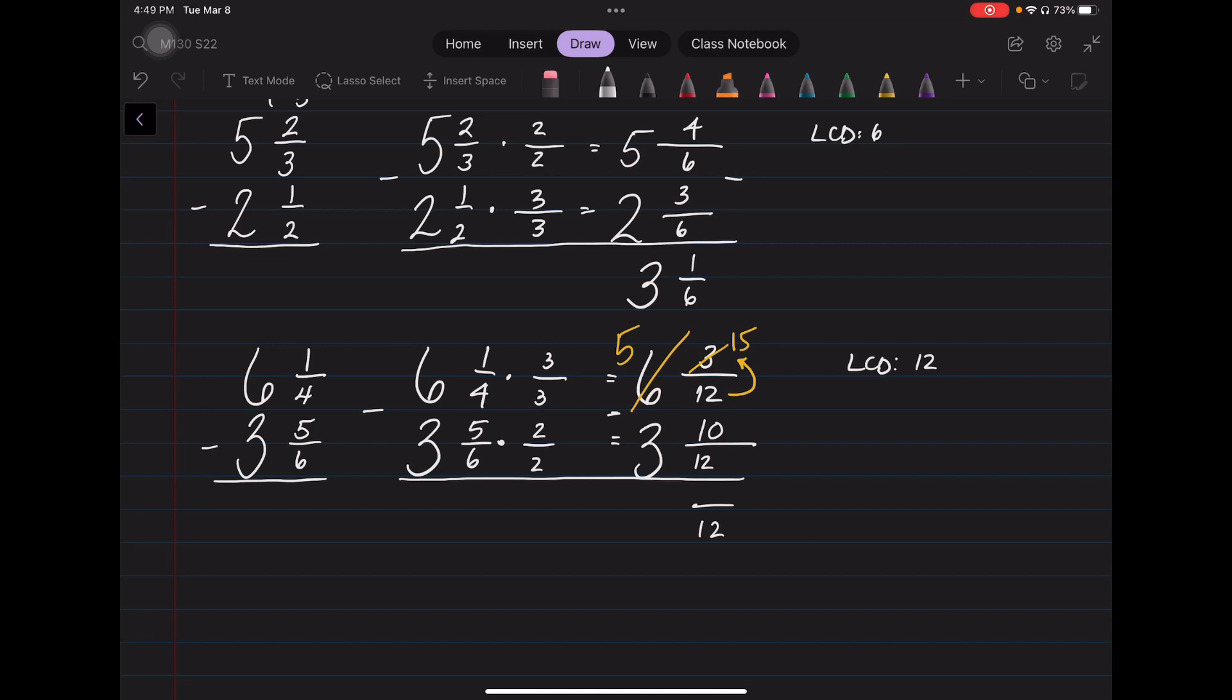15 minus 10 is 5. 5 minus 3 is 2. And so my difference was 2 and 5 twelfths.